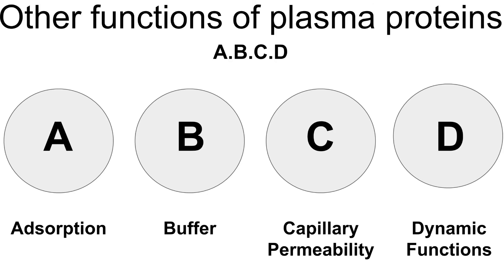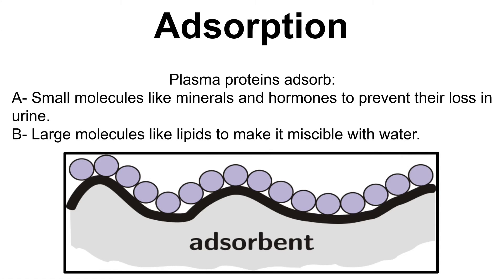Here is the second group of plasma protein functions. For easy memorization, we use the acronym ABCD, which stands for: A — Adsorption, B — Buffer, C — Capillary permeability, and D — Dynamic functions. First, adsorption. Plasma proteins adsorb two things: firstly, small molecules like minerals and hormones to prevent their loss in urine; and secondly, large molecules like lipids to make them miscible with water.